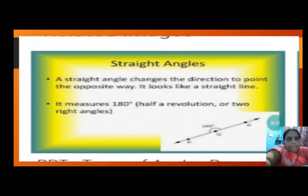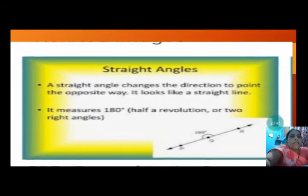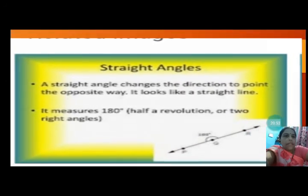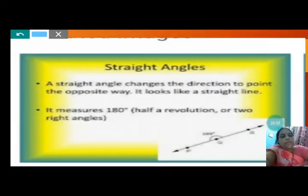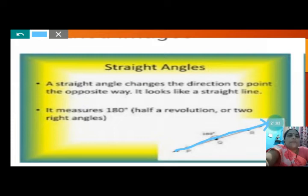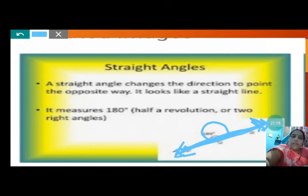A straight angle changes direction to point the opposite way. From this side also it is 180 degrees, and from the other side also 180 degrees — just change the position and it will still become 180 degrees, making a straight angle. It measures 180 degrees — half a revolution.